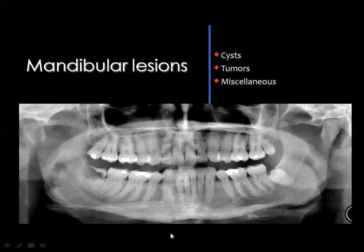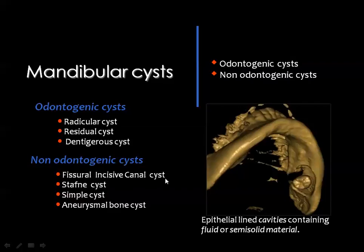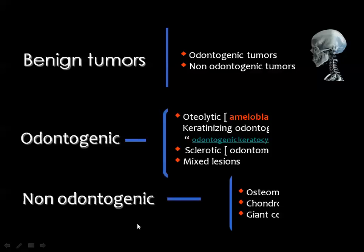We are going to handle mandibular pathology in three categories: mandibular cysts and tumors, followed by miscellaneous conditions. Mandibular cysts are divided into those originating from odontogenic structures and non-odontogenic cysts. The odontogenic cysts include radicular cysts, residual cysts, and dentigerous cysts. The non-odontogenic cysts include fissural or incisive canal cysts, Stafne cysts, simple bone cysts, and aneurysmal bone cysts.